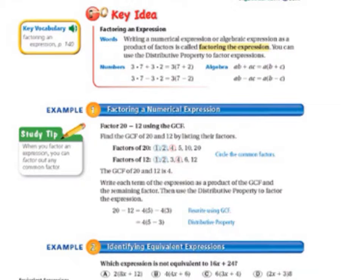Take a minute to write the key idea in your math notebook. Be sure and write it exactly as it appears on page 140 of your textbook, which is also right here. Writing a numerical expression or algebraic expression as a product of factors is called factoring the expression. You can use the distributive property to factor expressions. In numbers, it gives you an example, and then it also gives you an example using letters or using algebra.